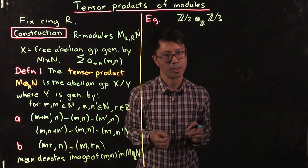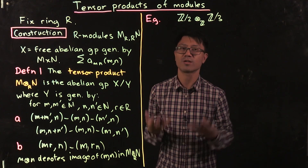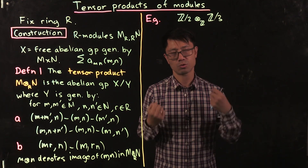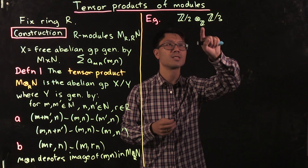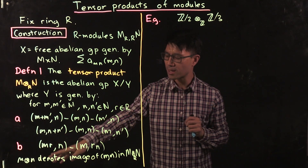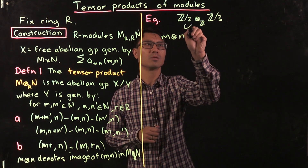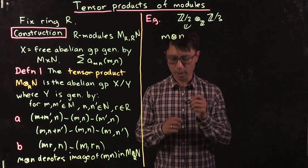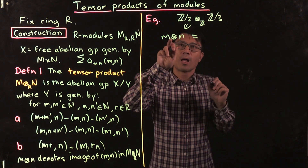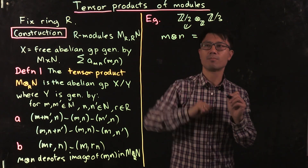That's the construction of the tensor product of modules. I want to show you a very simple example which shows how it's quite different from tensor products of vector spaces — there's a lot more interesting phenomena that can happen once you relax the criterion that the ring is just a ring as opposed to a field. So let's look at Z/2Z ⊗ᴢ Z/3Z. This is generated by elements of the form, basically these elementary tensors. Let's have a look at m ⊗ n inside here.